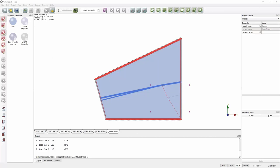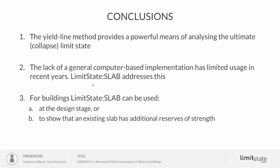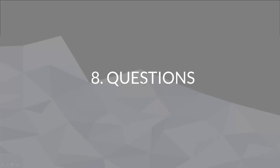Coming towards the end: the yield line method provides a powerful means of analyzing the ultimate collapse limit state. The lack of a general computer-based implementation had previously limited its usage, but Limit State Slab has been developed to address this. For buildings, it can be used at both the design stage or to show that an existing slab has a reserve of strength necessary when undertaking repurposing works. We'll now take questions.